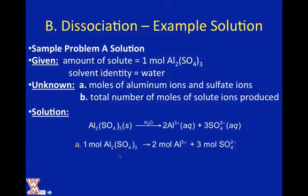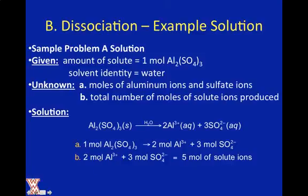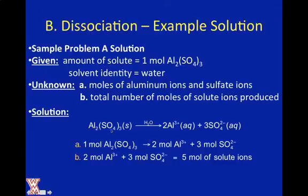If we dissociate one mole of aluminum sulfate, we're going to produce two moles of aluminum ions and three moles of sulfate ions. So the total number of ions is equal to two moles of aluminum ions plus three moles of sulfate ions, giving us five moles of ions total. Had they given us two moles to start, we would have had four and six respectively, for a total of ten.